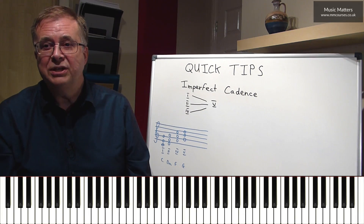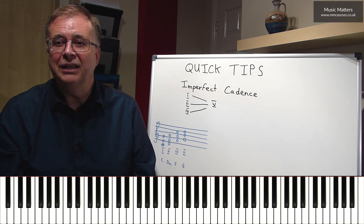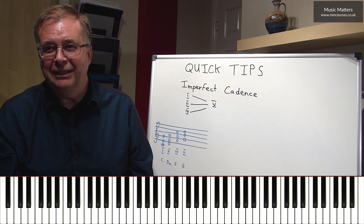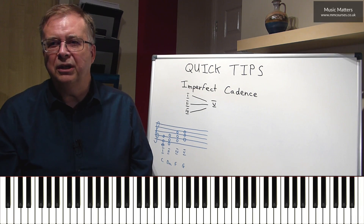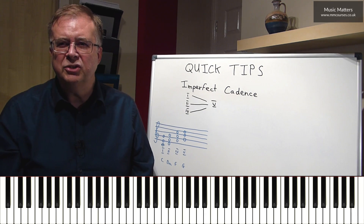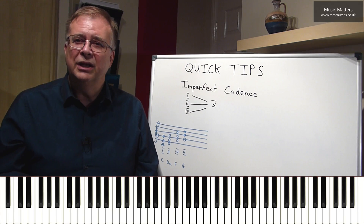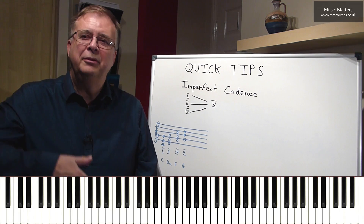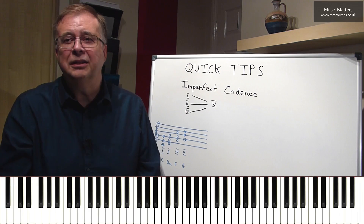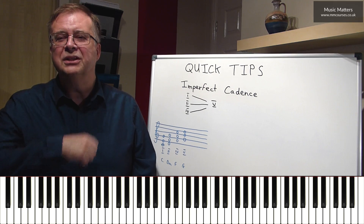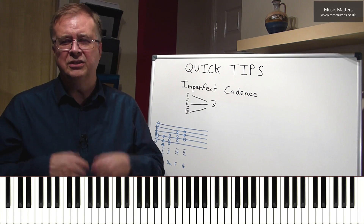Hopefully you might already have seen our earlier Quick Tips films in which we talked about the perfect cadence and the plagal cadence, and explaining what a cadence is — it's a kind of musical punctuation: full stops, commas, question marks, that kind of thing, that help to break up the music and allow it to breathe at the end of a phrase. The perfect cadence and the plagal cadence are kind of musical full stops, because they finish on chord I, the tonic chord, and that brings us home.